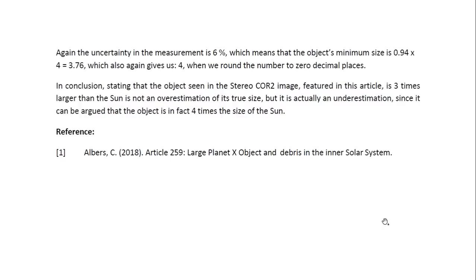So when I estimated it to be 3, I was already being conservative in my estimate. Now again, the uncertainty in this measurement would be 6%, which means that its minimum size is 0.94 times 4 or 3.76, which again rounds up to 4. So in conclusion, stating that the object seen in the STEREO COR2 image featured in this article is 3 times larger than the Sun is not an overestimation of its true size, but it is actually an underestimation, since it can be argued that the object is in fact 4 times the size of the Sun.